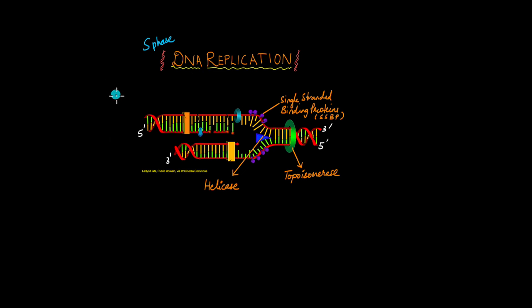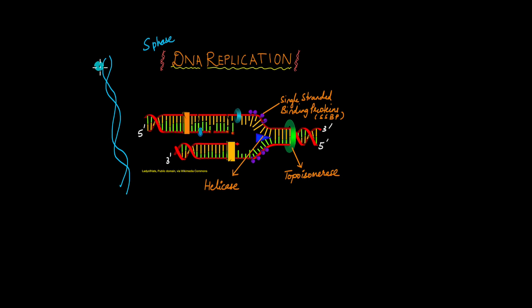Let us recall the structure of DNA. DNA is a double helical structure in which the two strands that make up the double helix run in opposite polarities. One runs from the 5' to 3' direction, the other runs from the 3' to 5' direction. The two strands have nitrogenous bases projecting inwards in a complementary manner so that they form complementary hydrogen bonding between the two strands.